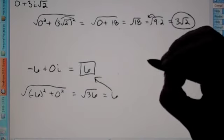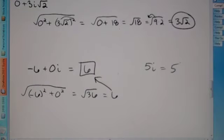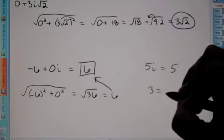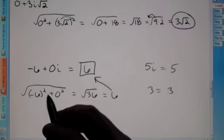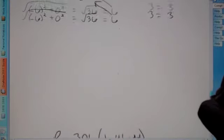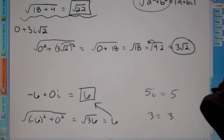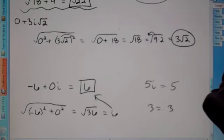The shortcut is: if you only have one term — for example, if I give you 5i, the absolute value is just 5. If your only term is 3, the absolute value is 3. That is our last example for complex numbers — addition and absolute value.